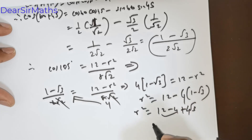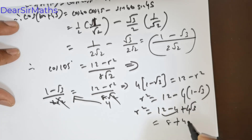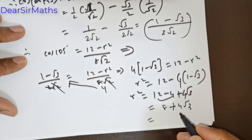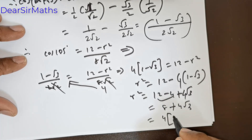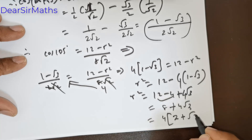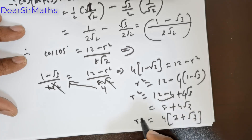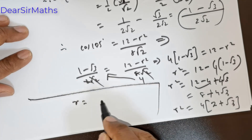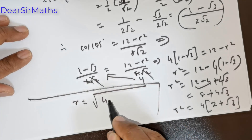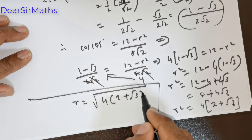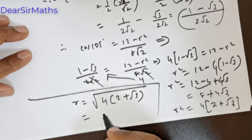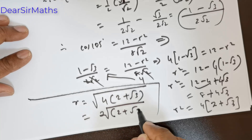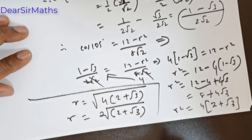So R squared equals 12 minus 4 plus 4√3, which equals 8 plus 4√3. Taking 4 out: R squared equals 4(2 + √3). Therefore R equals √(4(2 + √3)), which gives R equals 2√(2 + √3). This is my radius R.